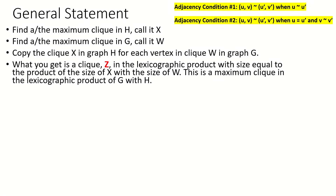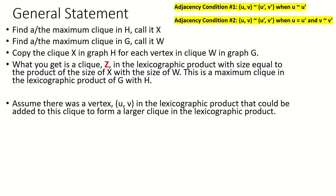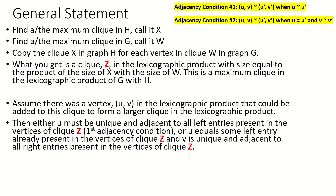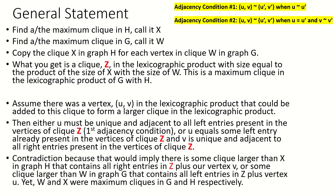Why can this resulting clique be no larger? Assume there was another vertex we could add to this set and still have a clique — some vertex adjacent to every other vertex in our current collection. Then by the adjacency conditions of a lexicographic product, either U must be unique and adjacent to the left entry of all other vertices, or U equals some left entry already seen and V is unique and adjacent to all other right entries. Regardless, this produces a contradiction, as that would mean we could add a vertex to either the maximum clique in G or in H and obtain a larger clique — yet by definition of maximum clique there can be no larger clique. Therefore, our construction has produced the largest possible clique in the lexicographic product of G and H.